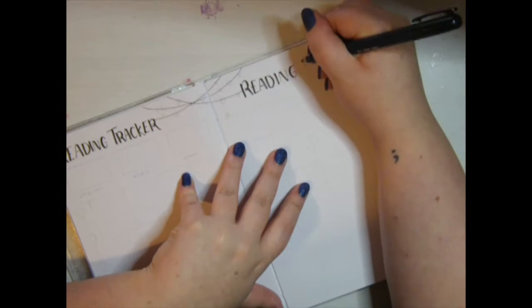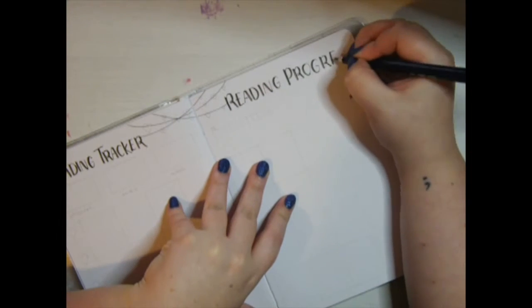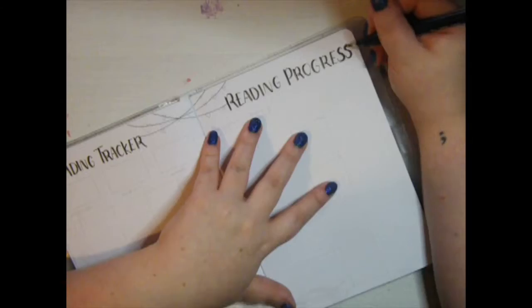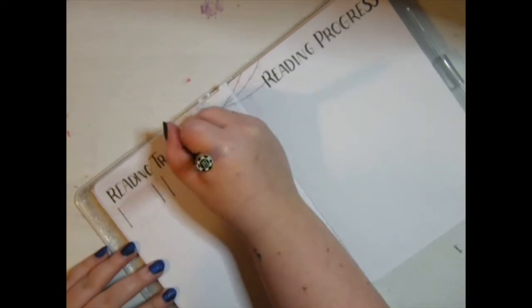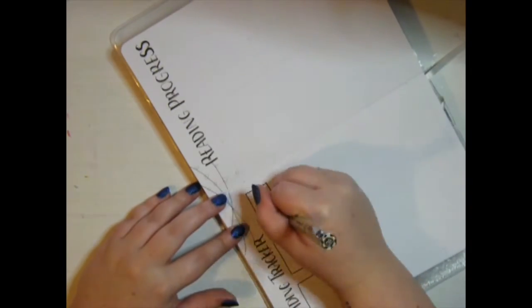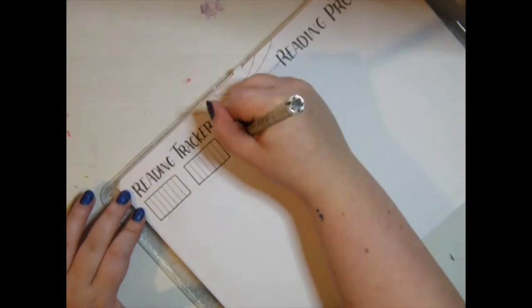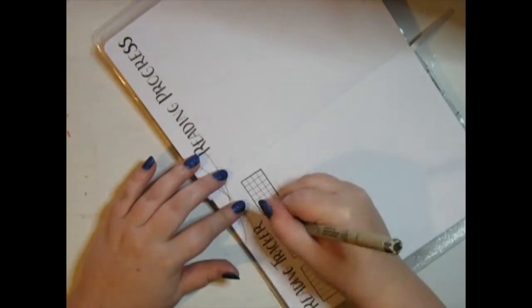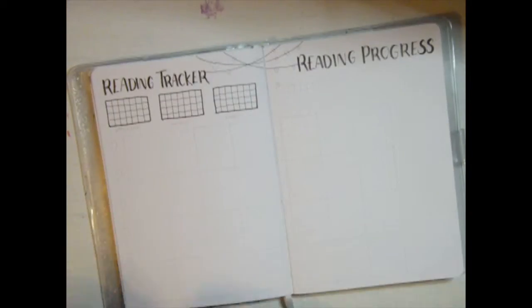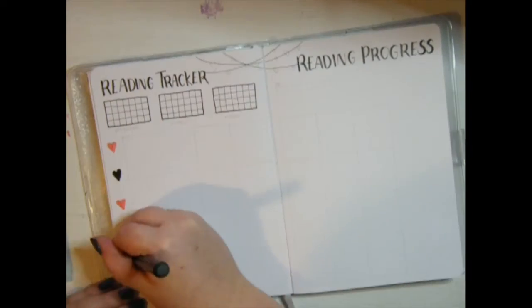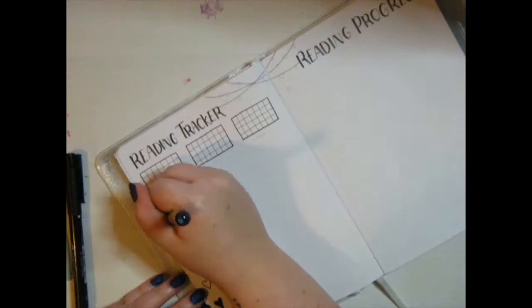This next double page spread is my reading tracker and my reading progress. I've got these little mini months at a glance and I can fill in a little square for when I've read a physical book, listened to an audiobook, or read an ebook. I've got a little hanging heart doodle coming down from that.